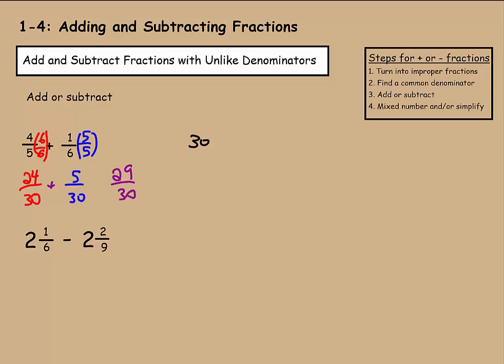So we have 24 over 30 plus 5 over 30, which gives us 29 over 30. So that was step 3, adding or subtracting. Now, can we simplify it all? 29 over 30 cannot be simplified there. 29 is a prime number.